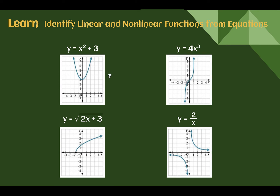Comparing those rules to graphs: none of the non-linear equations produce completely straight lines. x² + 3 has an exponent of 2 — not a straight line. 4x³ has a power of 3 — makes a curve. A square root makes a different curve. Dividing by a variable produces two curves. All of these confirm our rules. If you have a graphing calculator like Desmos, you can use it to verify whether equations are linear or non-linear.